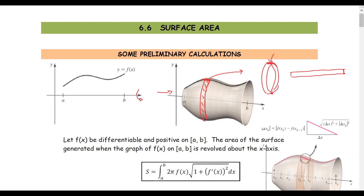The width of the rectangle is the segment length on the graph. The length of this rectangle is the circumference of the band, which is 2 times pi times r. The radius r is the height of the function, or the measurement from the axis of revolution to the curve.